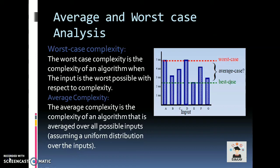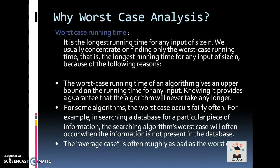Average complexity is the complexity of an algorithm that is reached over all possible inputs, assuming uniform distribution over the inputs. For example, if the element we have to find in the array will be found at the middle place or somewhere.